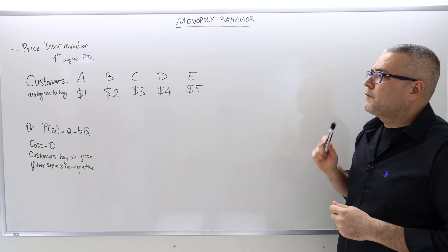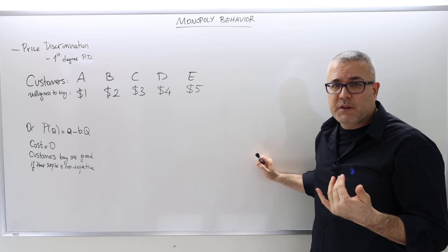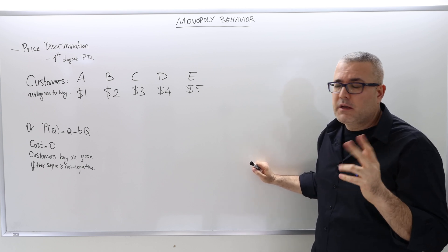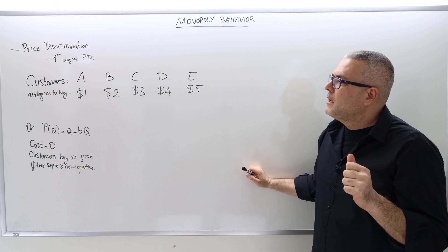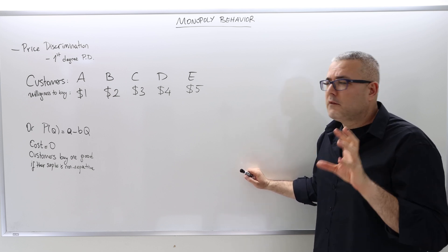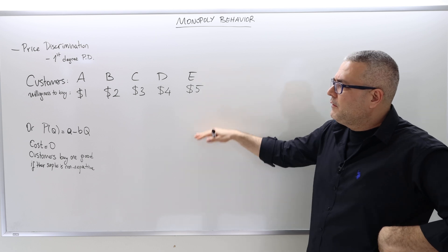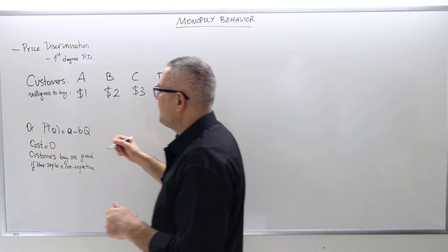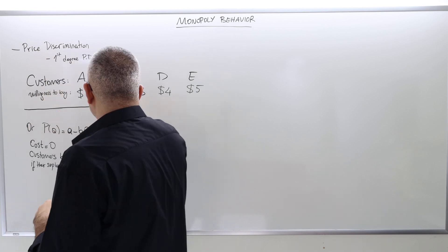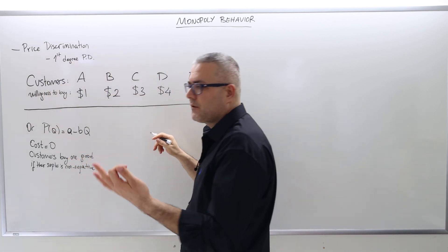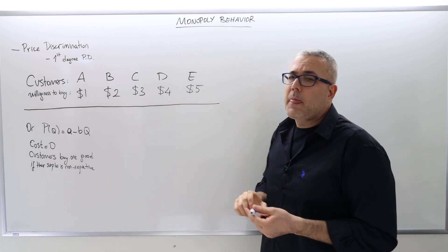In this video, I'm going to talk about first-degree price discrimination, probably the simplest of three price discrimination approaches that we will see. Here is the model for first-degree price discrimination. I'm going to give you two different models: one in which we have a discrete problem, and the other is the standard continuous model.